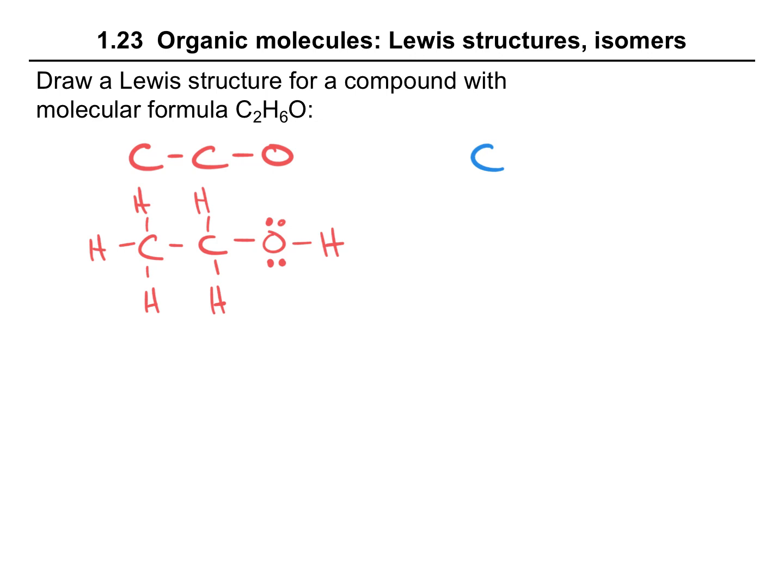It's also possible that you drew a structure with the connectivity of carbon-oxygen-carbon. So here you would have three hydrogens connected to the first carbon, followed by an oxygen, followed by a carbon with three hydrogens connected. Notice I didn't give you information on connectivity. I just gave you the molecular formula C2H6O.